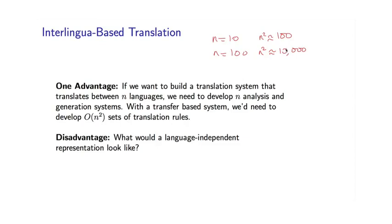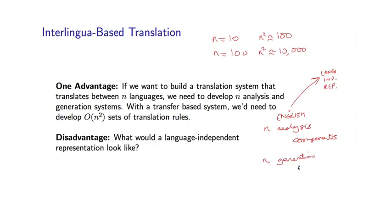The appealing thing with an interlingua-based system is that we just need to build n analysis components. For each of the n languages, we have a component which takes, say, English and resolves it to a language-independent representation. And we need n generation components — the generation component takes the language-independent representation and generates, say, a French string or an English string. Because we've done away with the transfer component, in theory we just need these n analysis components and these n generation components. So that could be a saving.